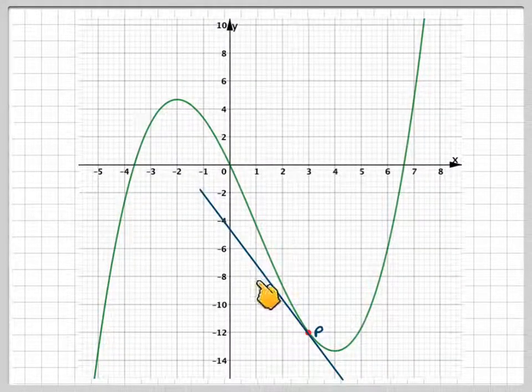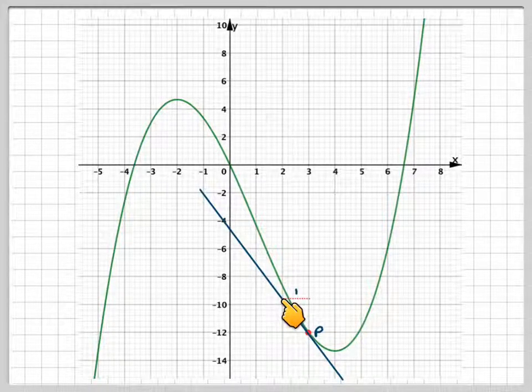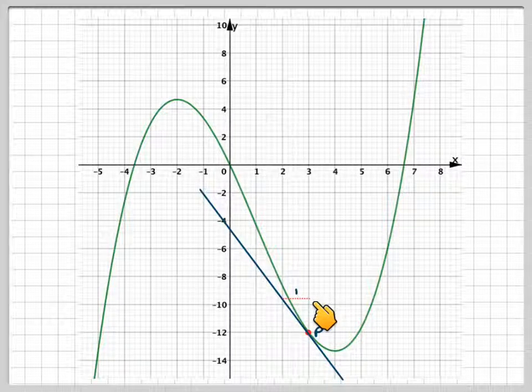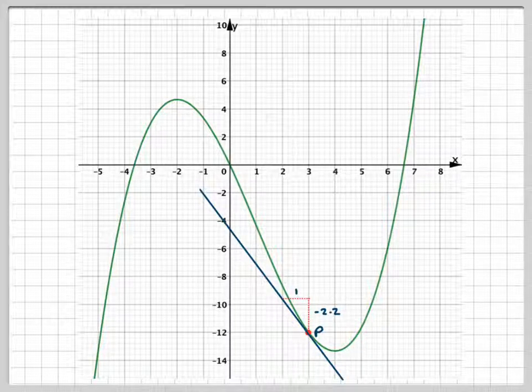Now you need to find the gradient of that tangent. So you'll need to show how you found the gradient of that tangent. So taking this point here and this point here, you must have some convenient points. This is 1 and this is minus 2.2. Take into account...